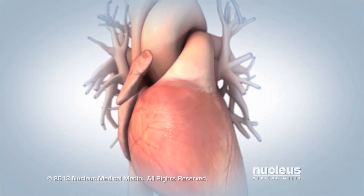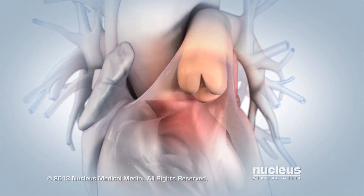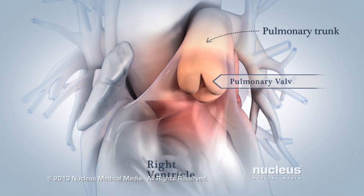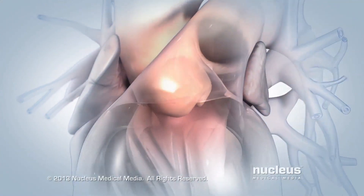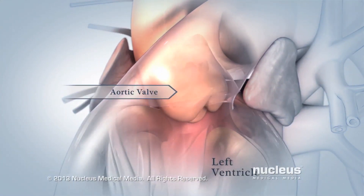Blood leaving the ventricles passes through another set of valves: the pulmonary valve between your right ventricle and pulmonary trunk, and the aortic valve connecting your left ventricle and aorta.